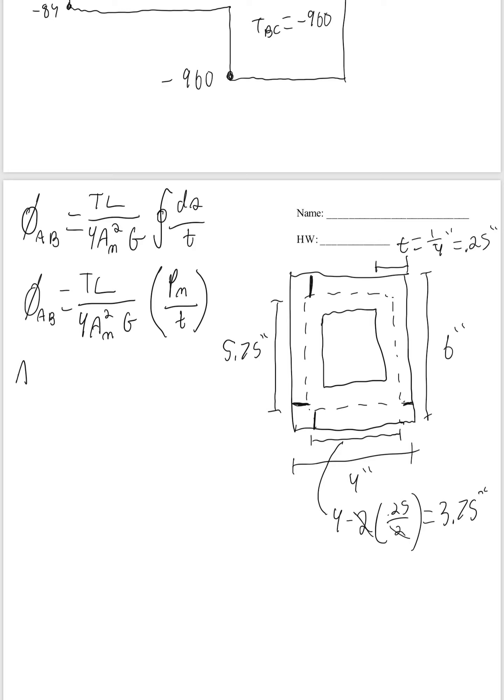So my area mean is just base times height. 5.75 times 3.75 gives us 21.5625. Our perimeter mean is 2 times 5.75 plus 2 times 3.75. And that gives us 19 inches.